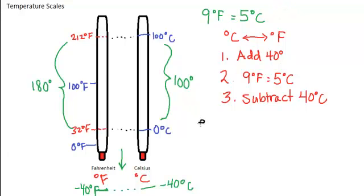For example, let's say we have 74 degrees Fahrenheit and we want to convert it to degrees Celsius. Step number one, add 40 degrees. So 74 plus 40 is 114. I am still in degrees Fahrenheit. The 74 was degrees Fahrenheit. I am still in degrees Fahrenheit.